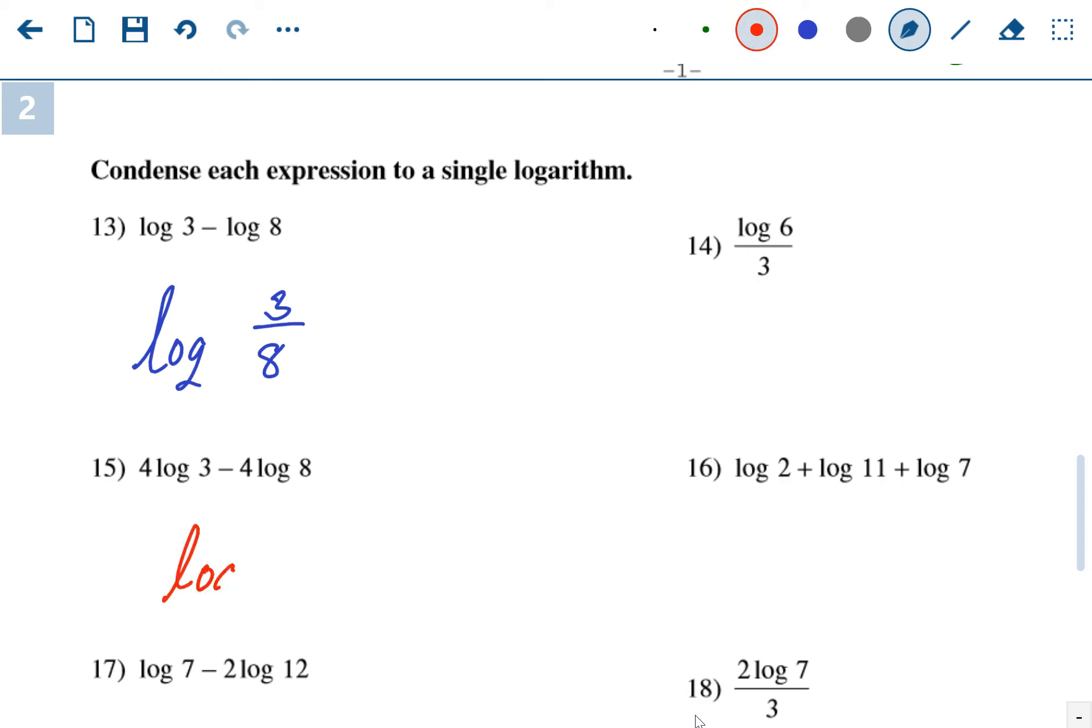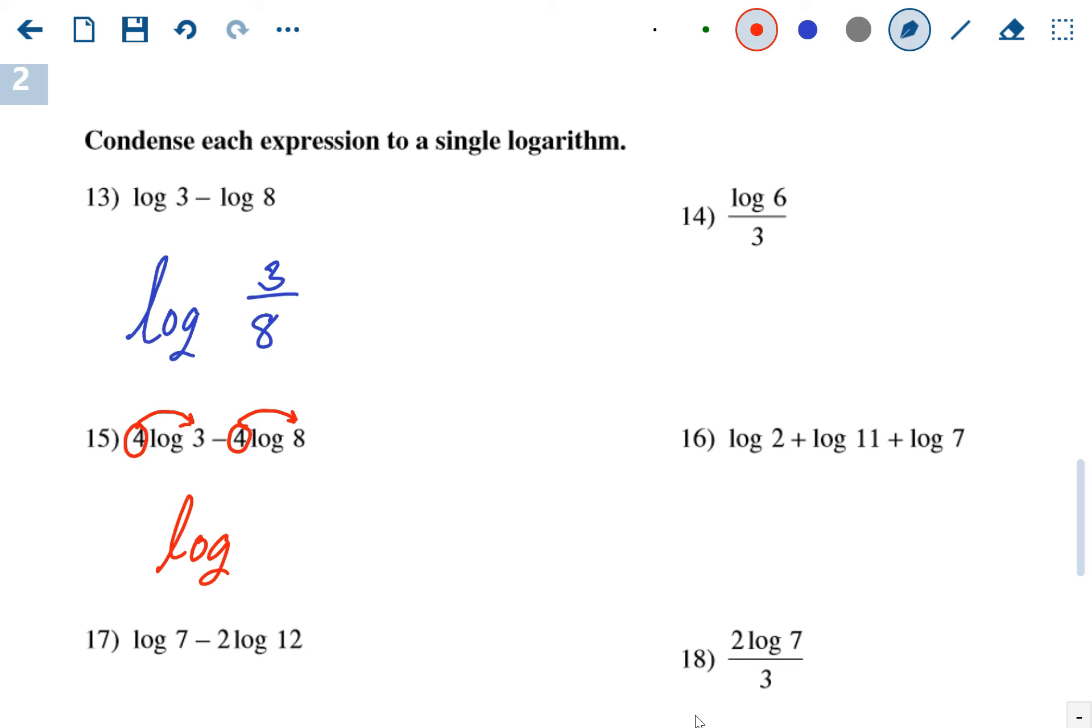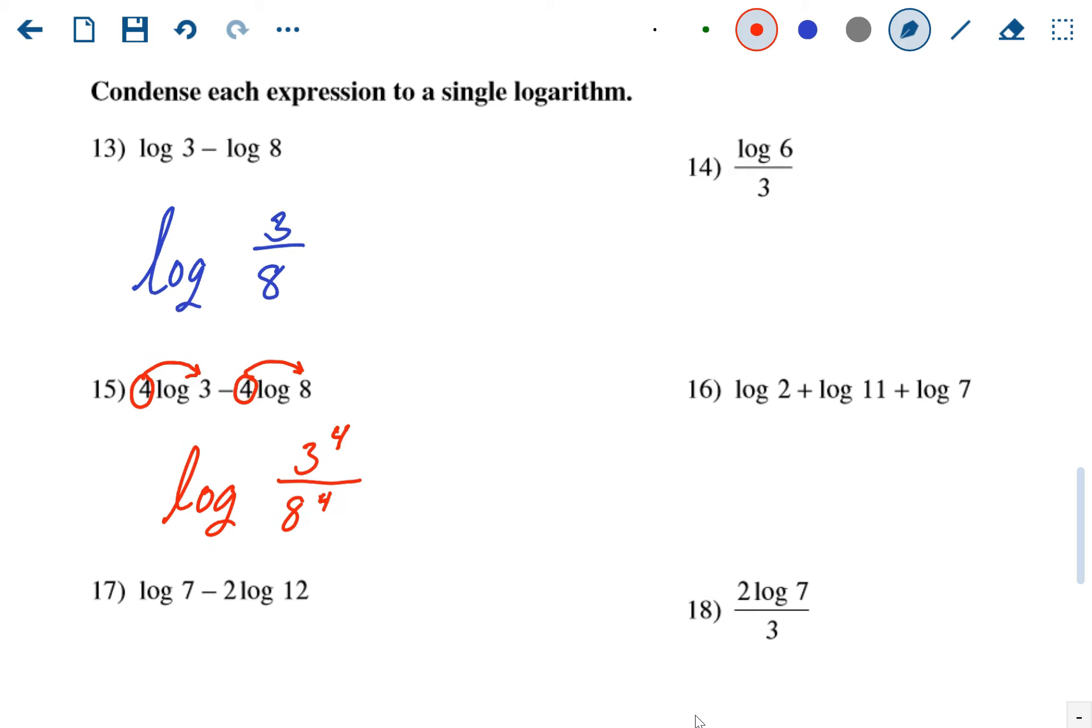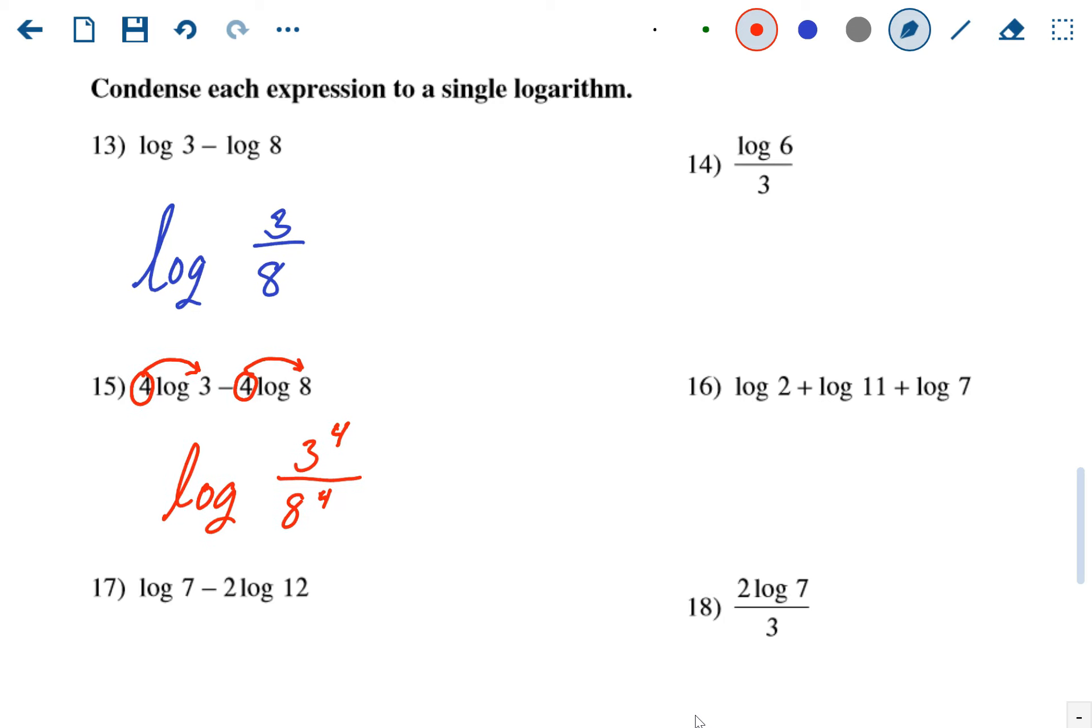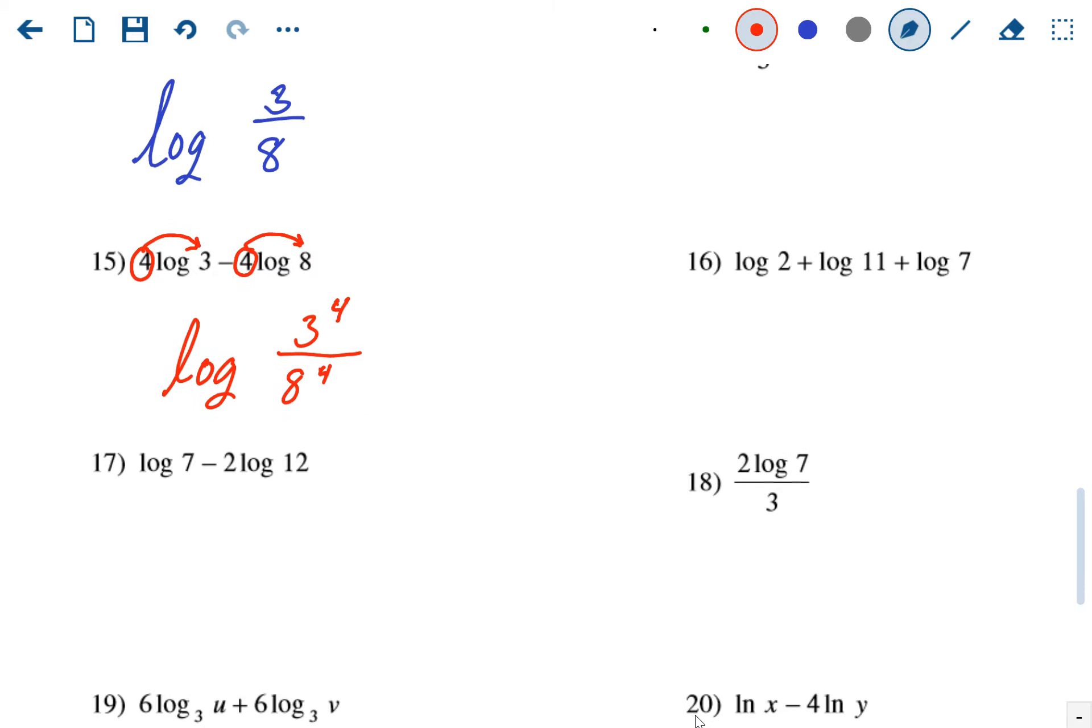15: again, we're just going to have 1 log. Anytime there's numbers out front, they're going to become exponents when we condense them. This one is a subtraction, so it's going to be a division. It's going to be log of 3 to the 4th power over 8 to the 4th power. And again, we're not evaluating these, we're just condensing and expanding. We don't have to simplify or anything. Problem 17: log 7 minus 2 log 12. 7 is going to go on top divided by 12 to the 2nd power.